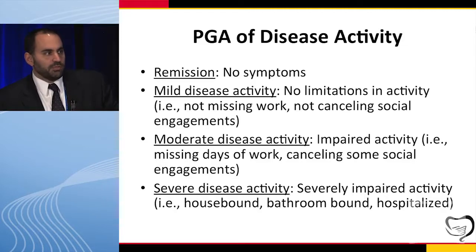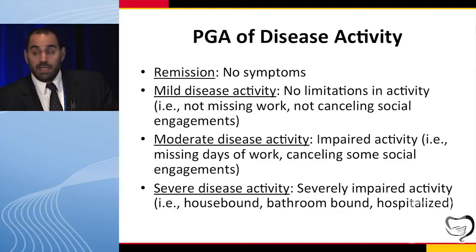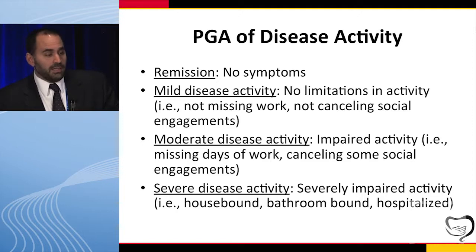One of the new performance measures is to assess disease activity at every visit for your patients with IBD. It doesn't say how you have to do that, so using a simple physician global assessment would be fine, and this is something that I use in practice. A patient is in remission if they have no symptoms. A patient has mild disease if their symptoms don't limit their social or work activity. Patients with moderate disease are starting to cancel things — social engagements, work. Those with severe disease are housebound, bathroom-bound, or hospitalized.